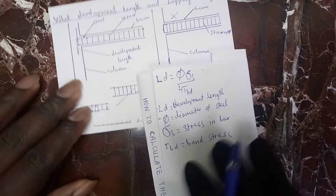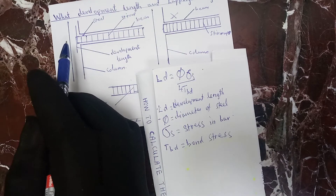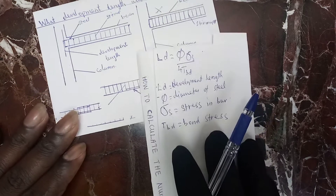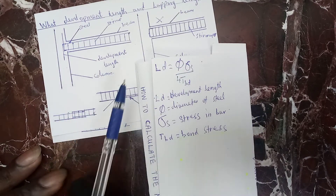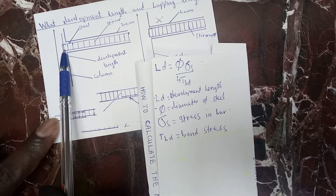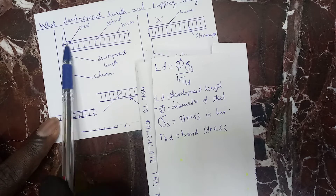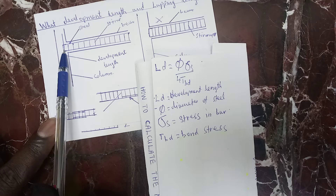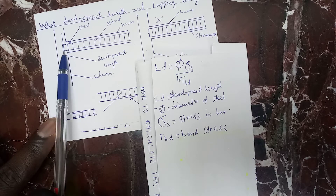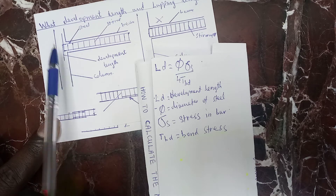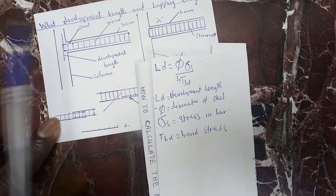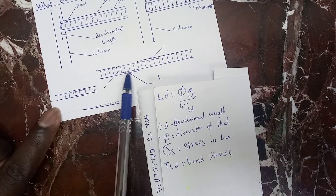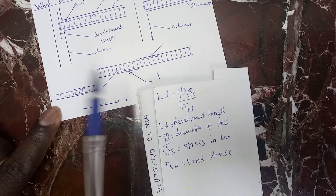So this development length is provided to give a good bond, a good connection between the column and the beam. When we finish this, we go to lapping length.